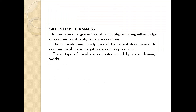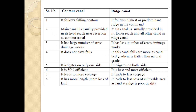Side slope canals: In this type of alignment the canal is not aligned along either a ridge or a contour, but is aligned across the contour. These canals run nearly parallel to natural drains, similar to the contour canal. They also irrigate the area on only one side. This type of canal is not intercepted by cross drainage works.